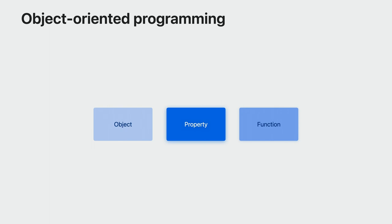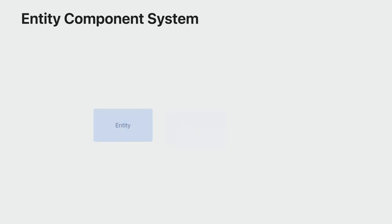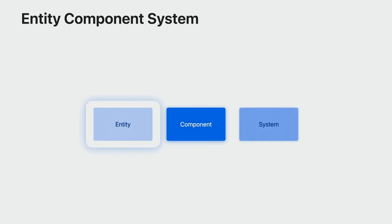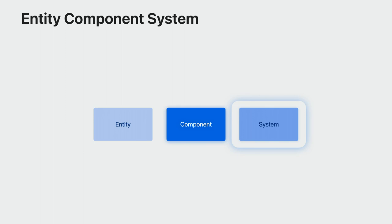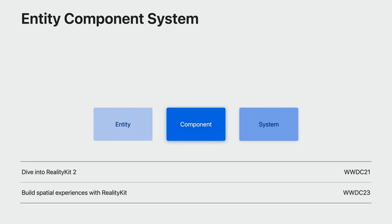In the object-oriented programming world, an object has properties which are attributes that define its nature, and it has its own functionality — you write these in a class. In the ECS world, an entity is anything you see in the scene, but entities don't hold data; we put data into components instead. Components can be added to or removed from entities at any time, dynamically changing the nature of an entity. A system is where behavior lives — it has an update function called once per frame where you query for all entities with a certain component and perform actions, storing updated data back into those components.